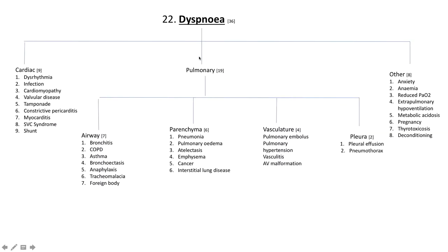Cardiac and pulmonary are not the only causes of dyspnea — there are a variety of others. Anxiety: these patients often hyperventilate, resulting in respiratory alkalosis which can cause hypocalcemia. Anemia can cause it. Reduced atmospheric pressure of oxygen — for example, mountain climbing at high altitude before acclimatization. Extrapulmonary hypoventilation. Metabolic acidosis, where patients often have Kussmaul respiration with increased respiratory rate and depth. Pregnancy, thyrotoxicosis, and deconditioning.